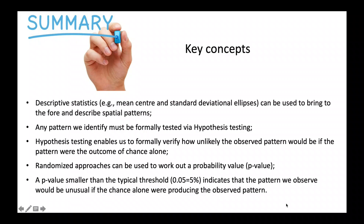This slide summarizes the key concepts covered during this session. We should use descriptive statistics — like the mean center and standard deviational ellipses — to bring to the fore and describe spatial patterns. Any pattern that we identify must be tested in a formal way via hypothesis testing. Hypothesis testing enables us to formally verify how unlikely or likely the observed pattern would be under the null hypothesis. We can use a randomized approach to work out a probability value called p-value. A p-value smaller than the typical threshold of 5% indicates that the pattern we observe would be unusual if chance alone were producing it.